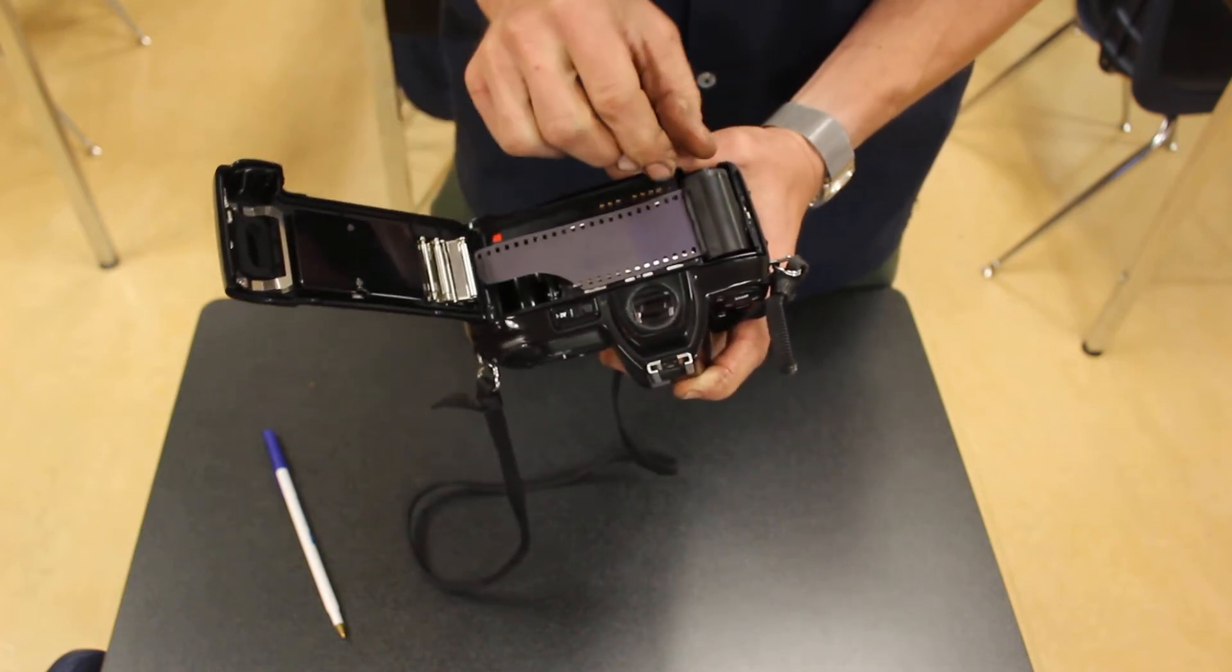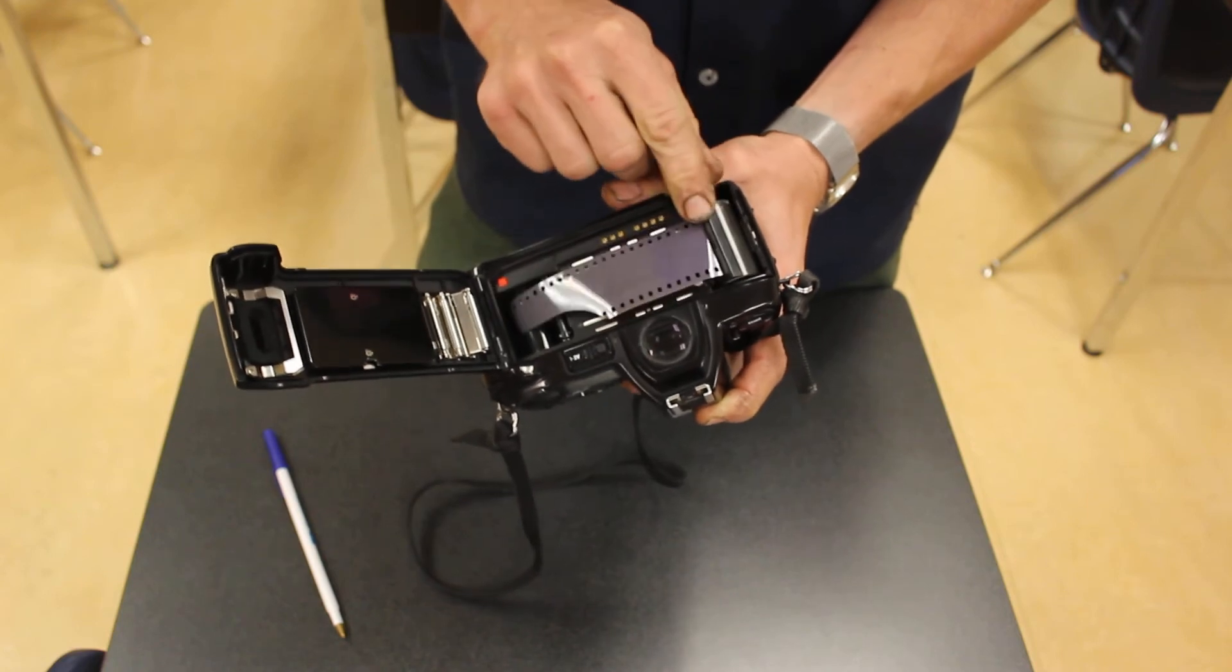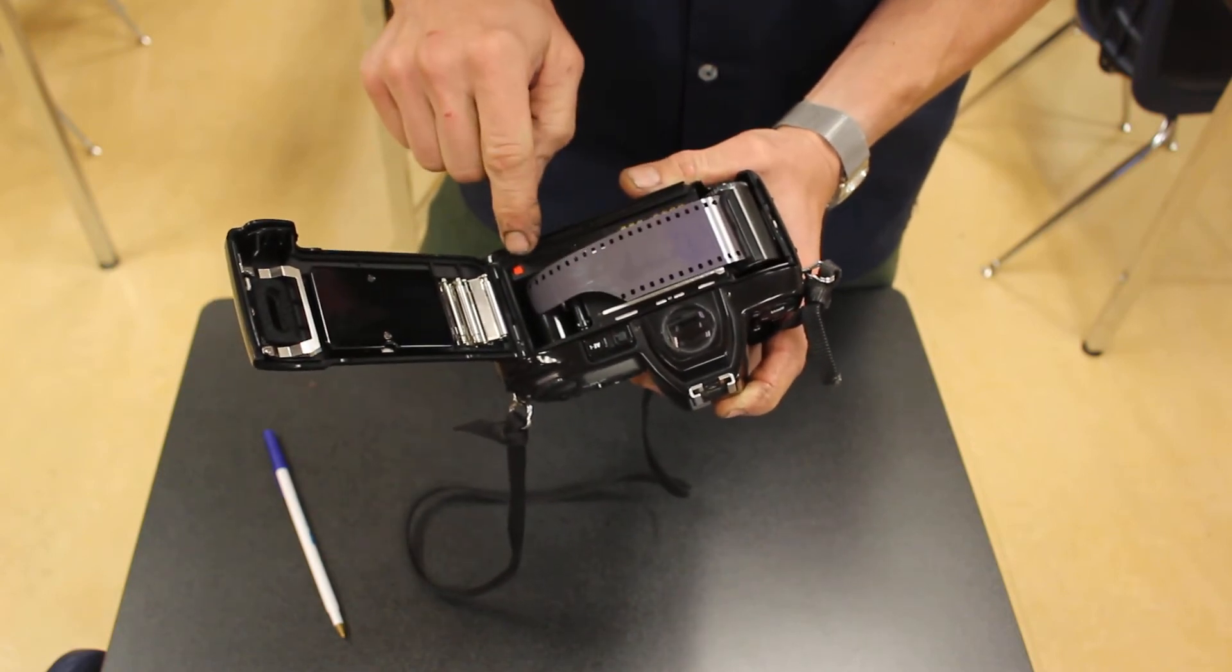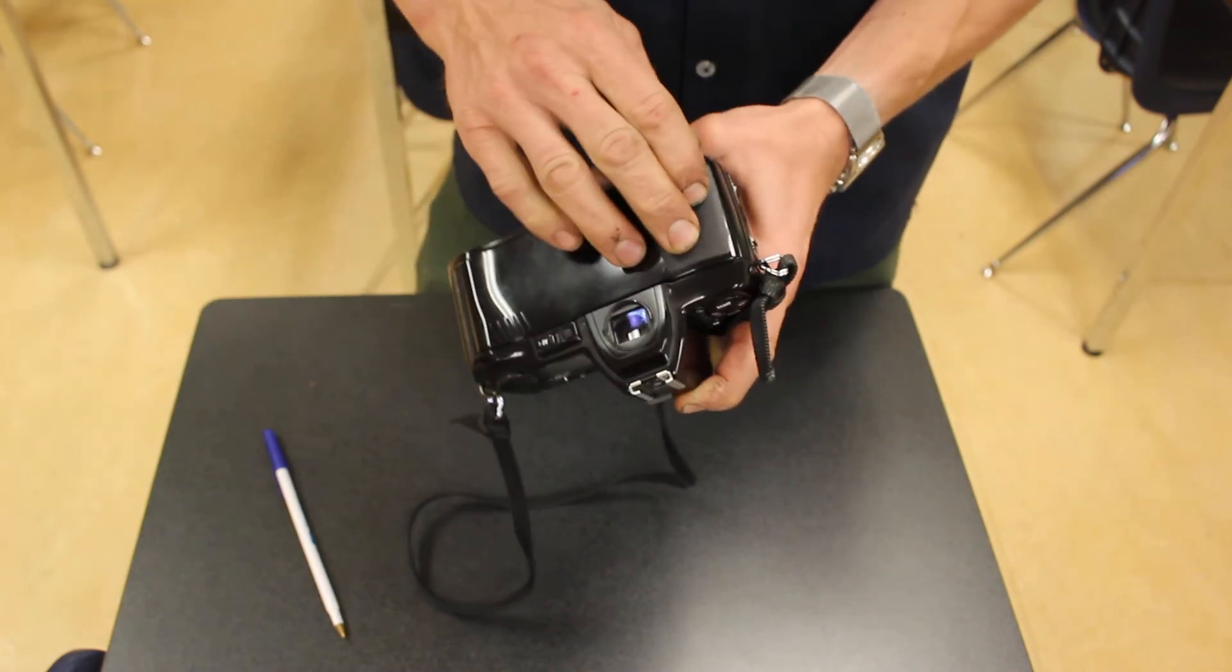You're then going to pull the film over, and you want the film to be lined up with this red dot on the camera here. Close the camera back.